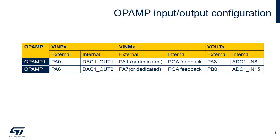This table shows the internal and external connections of the op-amp inputs and outputs. Each op-amp module has two inputs — inverting and non-inverting — and one output. The non-inverting inputs can be connected to either a GPIO pad or internally to a DAC output. The inverting input is used for feedback when PGA mode is selected, or can be connected to a GPIO pad.